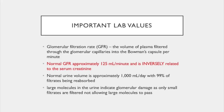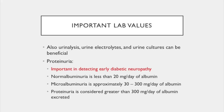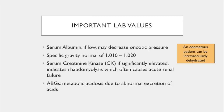Other important lab values include urinalysis, urine electrolytes, and urine cultures. Proteinuria — protein in the urine — is important for detecting early diabetic nephropathy, indicating damage to the glomerular membrane. Normal albuminuria is less than 20 mg per day. Microalbuminuria is approximately 30 to 300 mg per day. Proteinuria is considered greater than 300 mg per day — the same level used as a marker for eclampsia in pregnant women. Low serum albumin may decrease oncotic pressure if albumin is being excreted by the kidneys.